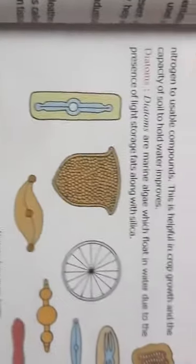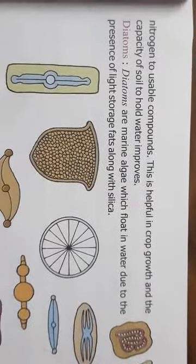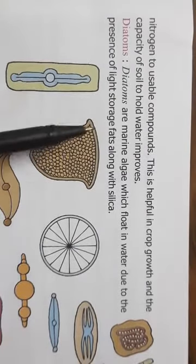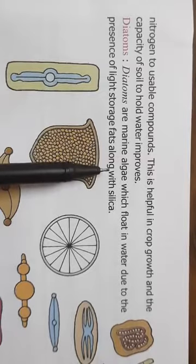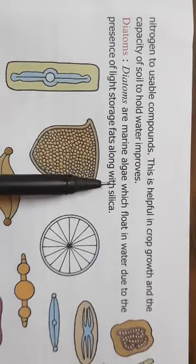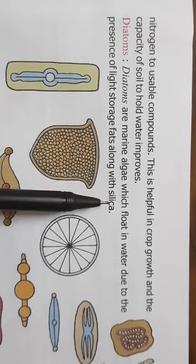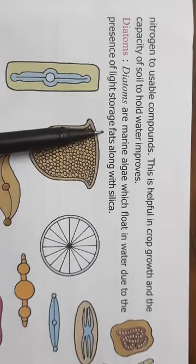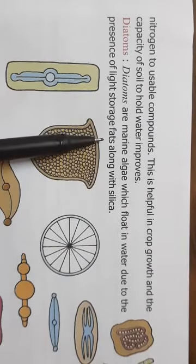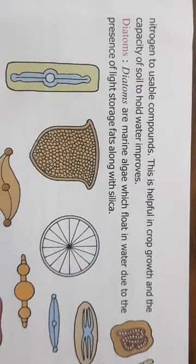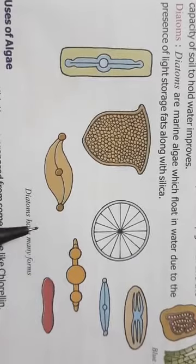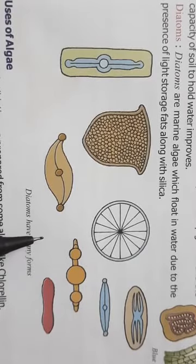Then, the third type of the algae are called as the diatoms. Diatoms are marine algae and they float in water. And why do they float in water? Due to the presence of very light storage fat. They have got storage fat in the body. So, diatoms look like this almost if you see it under a microscope.